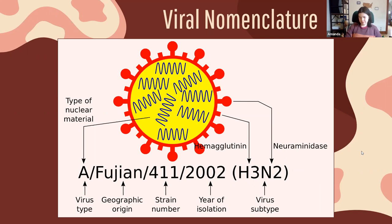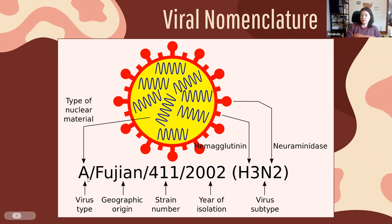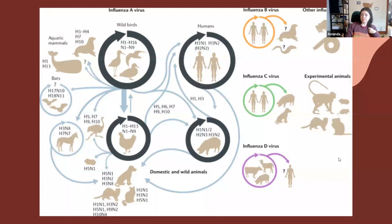The way we name influenza viruses is complex. You're probably familiar with viral subtypes like H3N2, H1N1, or H5N1 — this is really specific to influenza A. The longer name includes the virus type (A, B, C, or D), its geographic origin — where it was originally isolated — its strain number, the year it was isolated, and then the viral subtype.